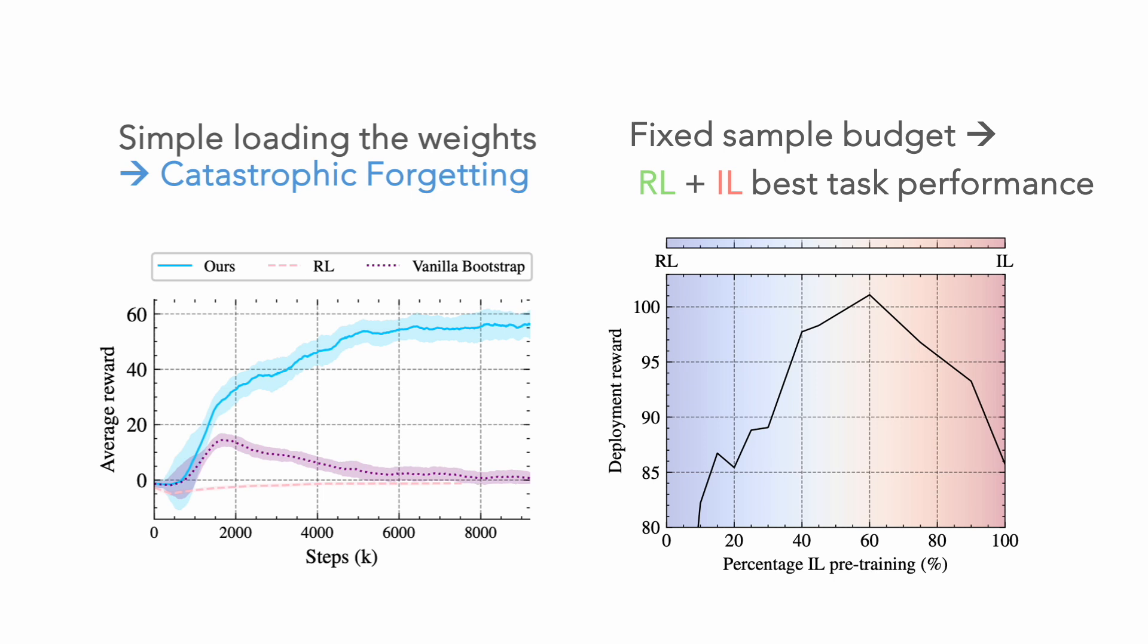We also demonstrate that, with a given sample budget, distributing the task between imitation learning and reinforcement learning allows us to achieve optimal policy performance after approximately 60% of pre-training. Combining IL and RL using our approach can achieve the best task performance given the sample budget.